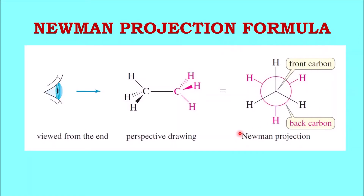What is the use of this formula? Many times there is some interaction between the groups attached to the front carbon and the groups attached to the back carbon. Sometimes there are bulkier groups like methyl and tertiary butyl groups which create steric hindrance — we can study that from this structure. There can also be intermolecular interactions like hydrogen bonding which provide stability to the molecules. In this way we can understand some properties with the help of Newman projection formula.